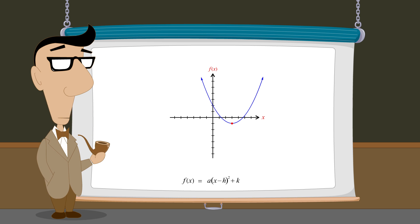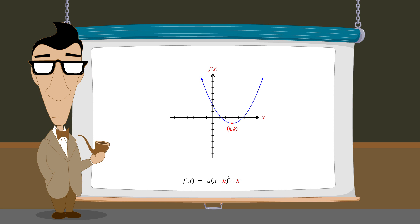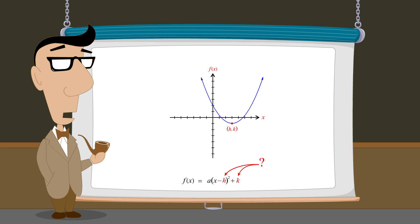It is obvious that when sketching the graph of a quadratic function written in vertex form, the fact that the constants h and k are the coordinates of the parabola's vertex is helpful. However, it is not so obvious why h and k are the vertex's horizontal and vertical coordinates. In the next lecture, we will see why this is the case.